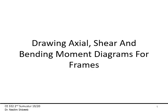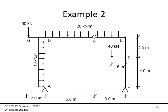Hi guys, so this is the drawing of axial shear and bending moment diagrams for frames. This is a continuation to what we had on Thursday. I'm going to do another example, but this example is going to be a little bit more involved. We're especially going to talk about how to handle the T in the frame. The frame has two hinges at A and B, and an internal hinge at C.